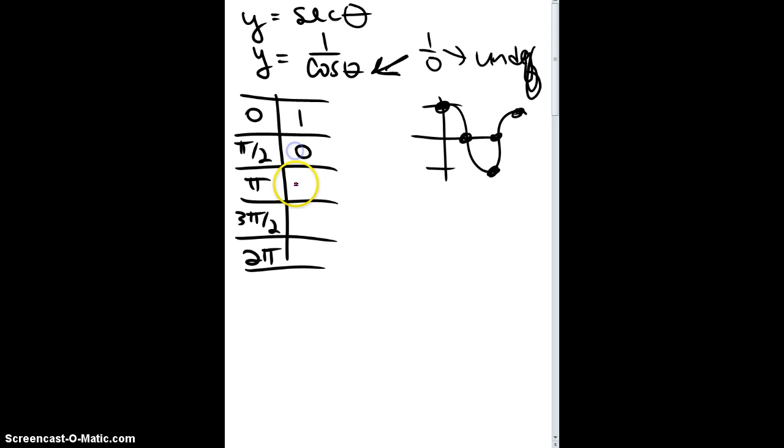which means it starts out at one, goes to zero, goes down to negative one, goes to zero, back up to one, or you're going to have to draw the unit circle and take all the x values off of that, so whatever is fine with me, however you get that.